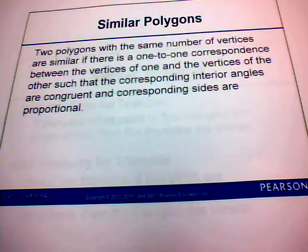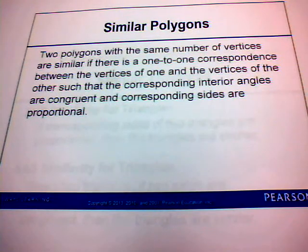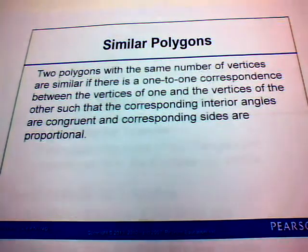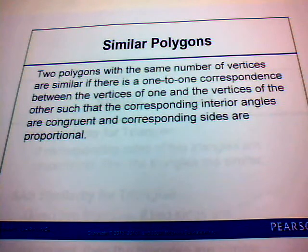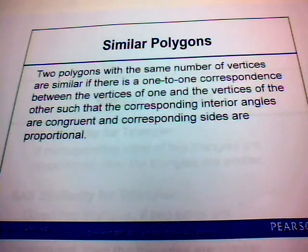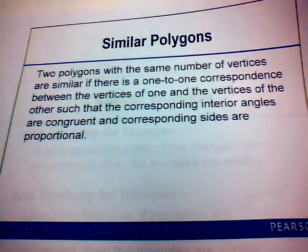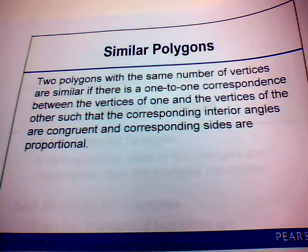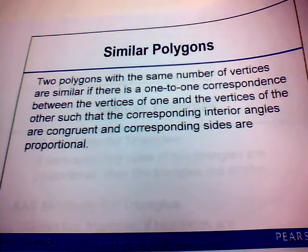With similar polygons, two polygons with the same number of vertices are similar if there is a one-to-one correspondence between the vertices such that the corresponding interior angles are congruent and corresponding sides are proportional — meaning the corresponding sides must have the same ratio.